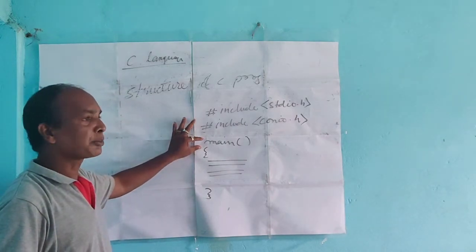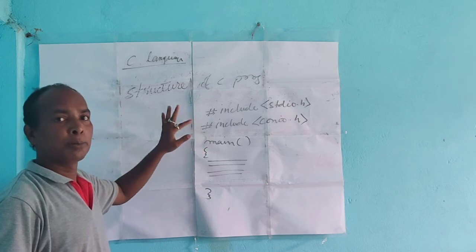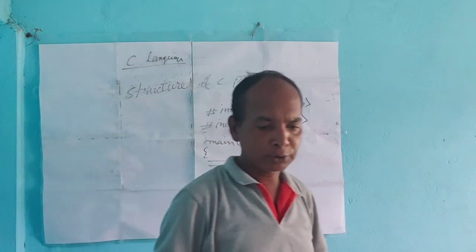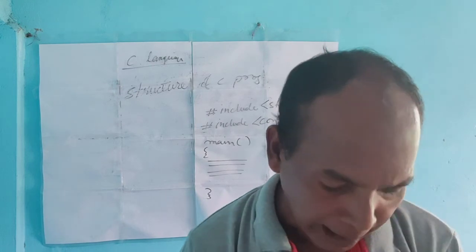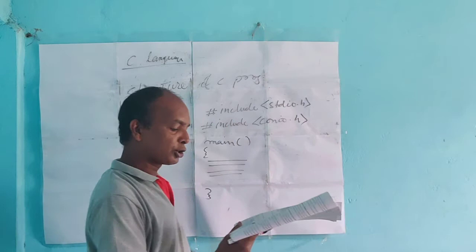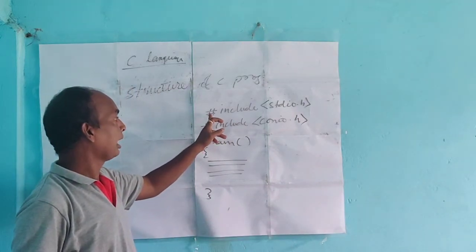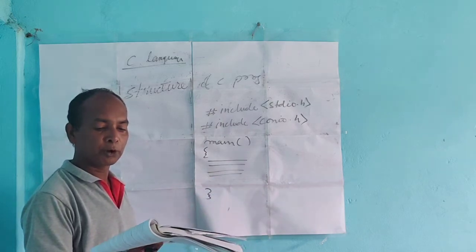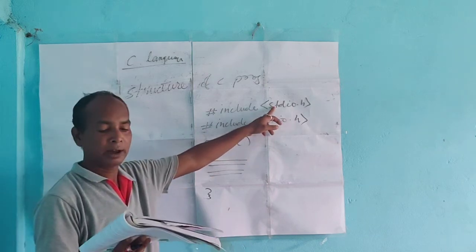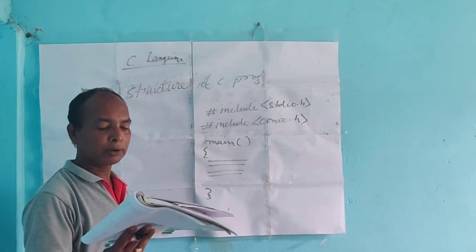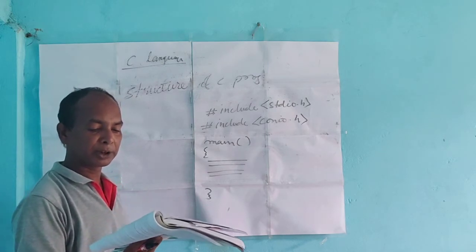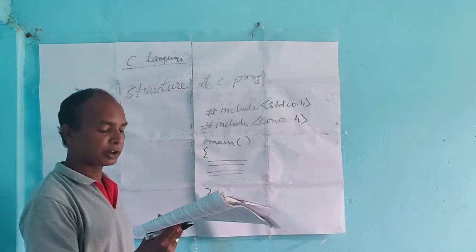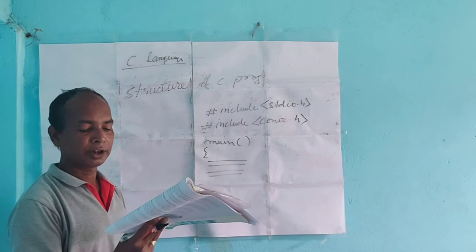There are different types of main functions: int main, main, void main, etc. I will explain each type in the next class. The line beginning with the hash sign is called the preprocessor directive. It tells the preprocessor to include the file stdio.h with the source code before compilation. This file contains declarations of basic standard input/output functions such as printf, scanf, etc., so that you may use these functions in your program.